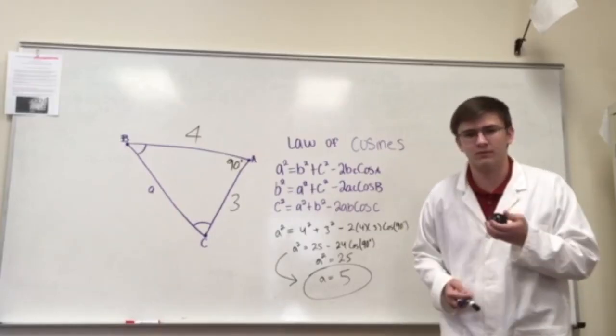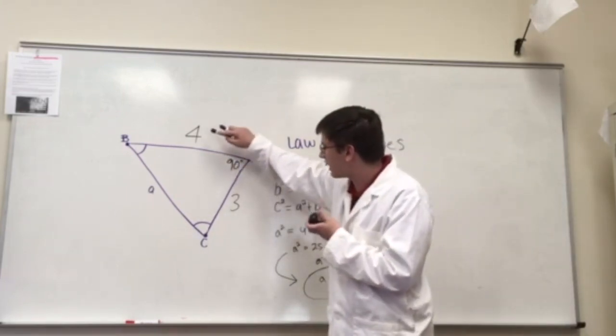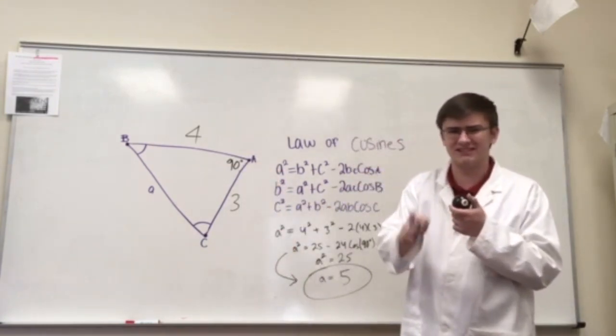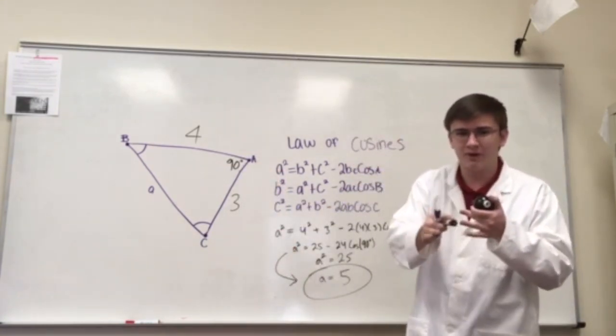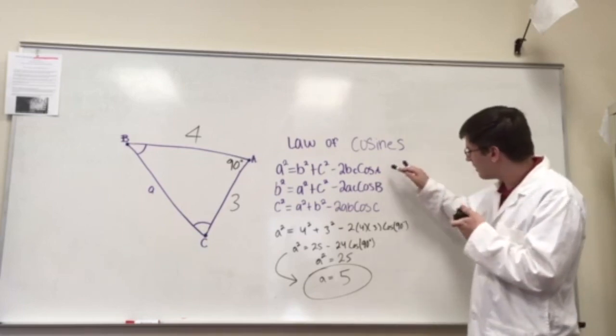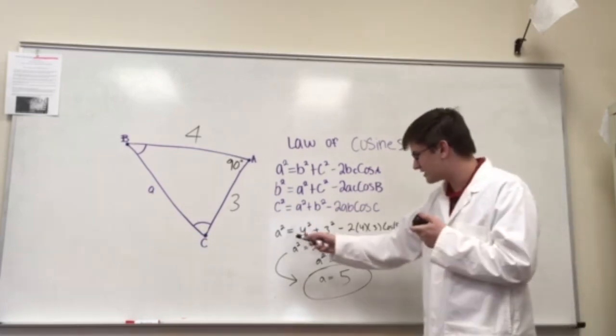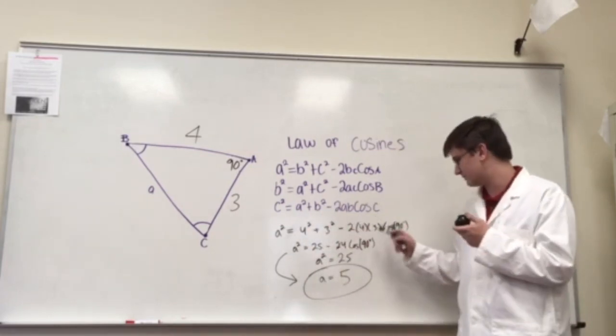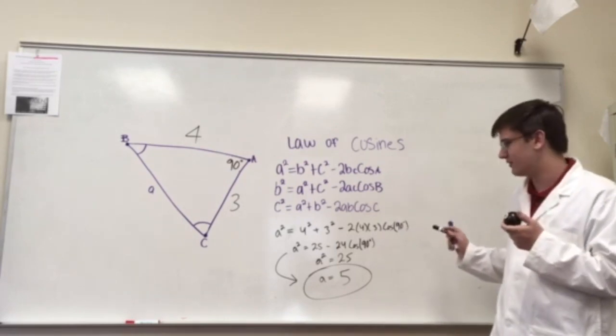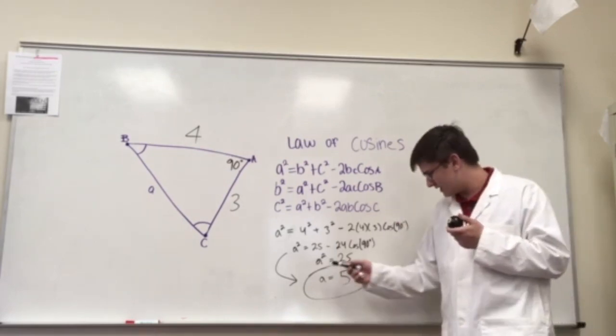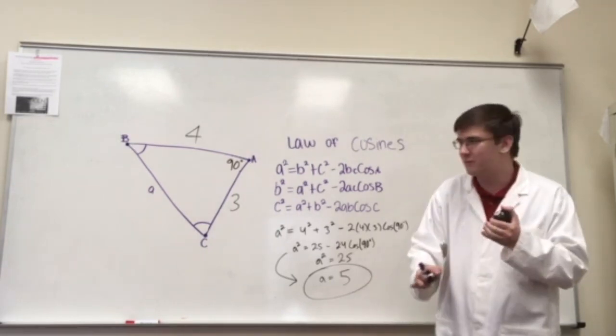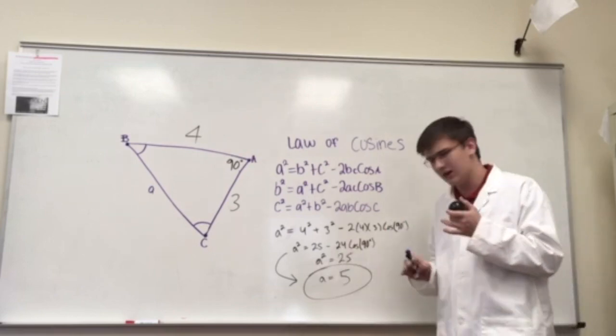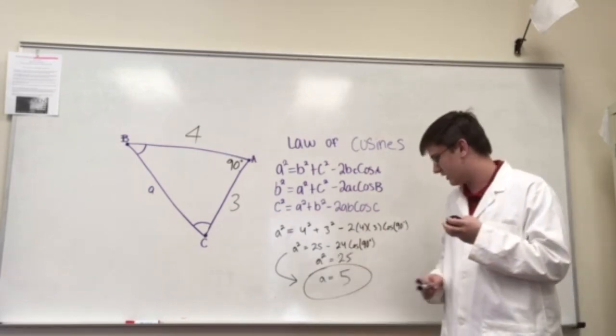Now let's do a practice problem real quick. Right here we have sides measuring at 4 and 3 and an angle at 90 degrees. Now I'm well aware that this is a special right triangle, but bear with me. As you can see, we can just plug this right into our formula here. We get a squared is equal to 4 squared plus 3 squared minus 2 times 4 times 3 times the cosine of 90 degrees. After we simplify that out, we get a squared is equal to 25. Now before you plug that 25 in for a, remember this is the square of a, so you have to square root it and you get a equals 5.